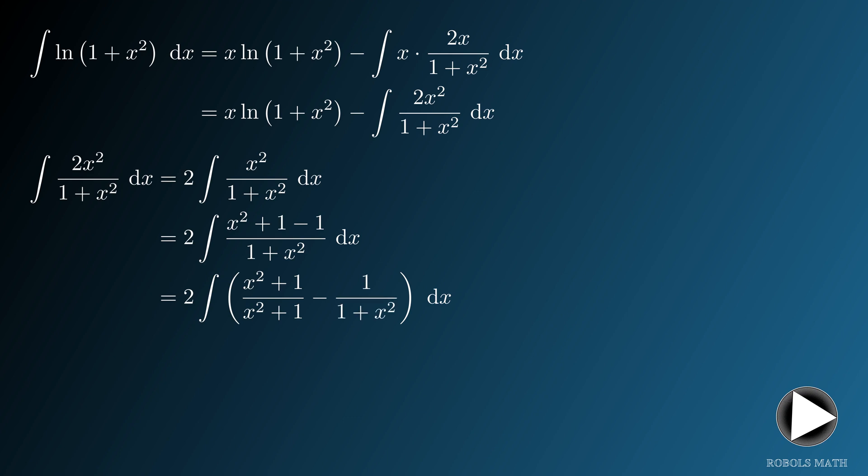And so the integral becomes twice the integral of 1 minus 1 over 1 plus x squared. The antiderivative of 1 is just x, while that of 1 over 1 plus x squared is arctan of x.